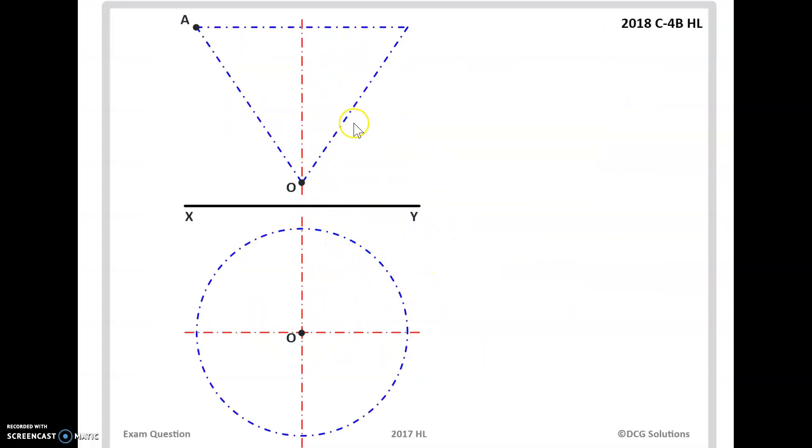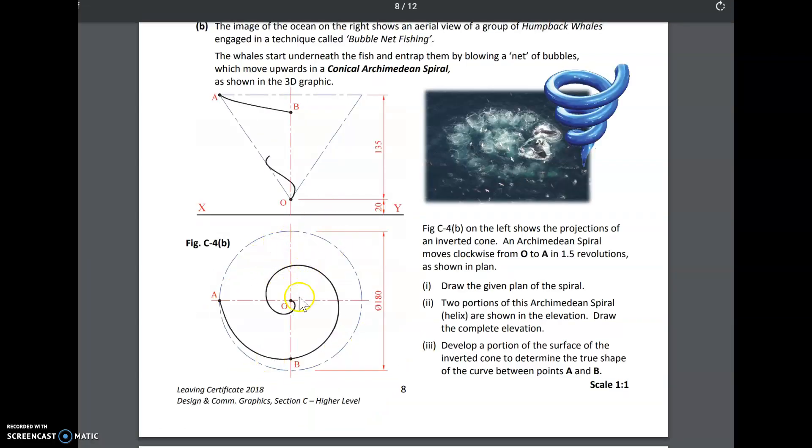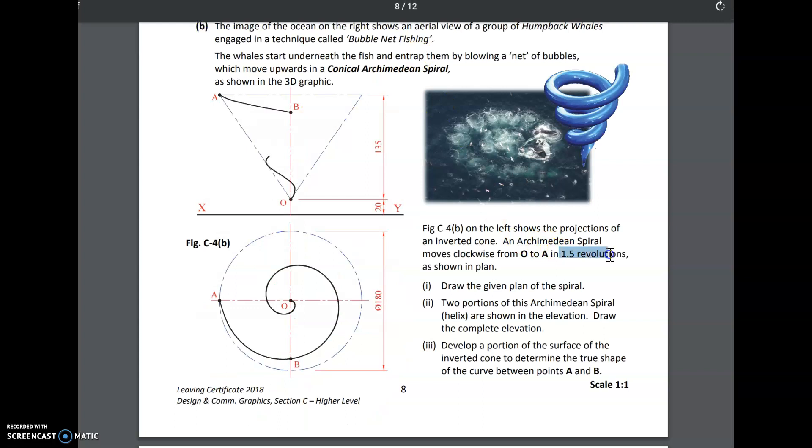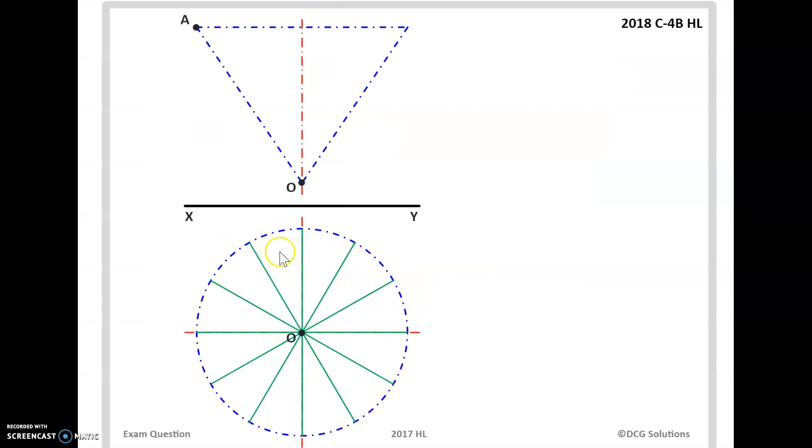Our first job is to draw out our elevation and plan. We're given the dimensions in the question. Our next job then, we're going to have the spiral come around. Like we do with any cone or sphere, we generally divide it up. We have 12 generators. It tells us in the question it's going in 1.5 revolutions from O to A. So O all the way out, it revolves out to A, 1.5. If we look at our question, this is divided up in 12. That is counted as one revolution. So if we divide it up into 1.5, 12 is 1, 6 is half. So it's going to be 18 in total. We need to divide our generators up. We need to have 18 marks on our generators.